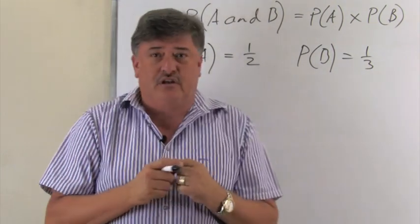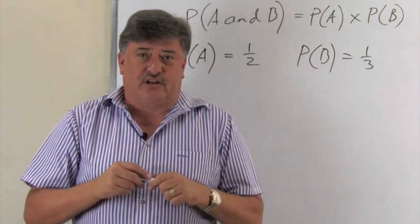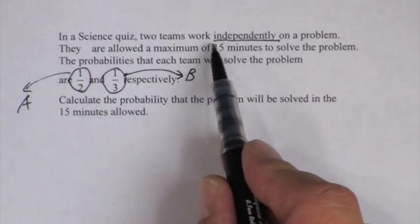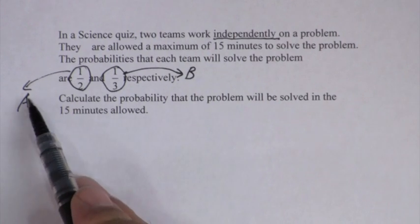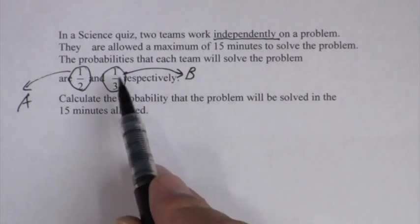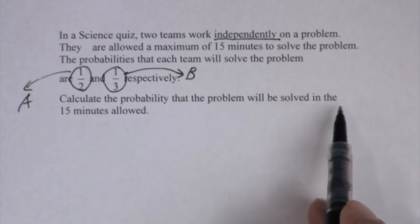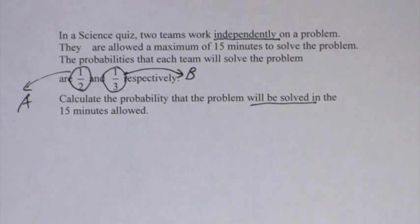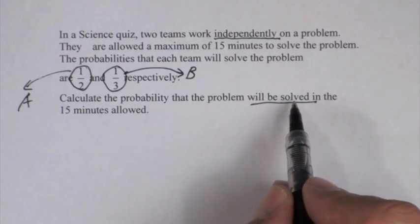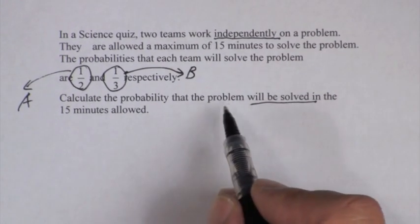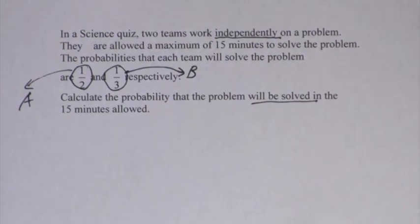Now for the question — this was our given information. What do they want us to answer? Let's read the final question one more time. We already dealt with the independence, and we already worked with the half and the third. We said the probability team A will solve it is a half, and the probability team B will solve it is a third. Now: calculate the probability that the problem will be solved within the time allowed.